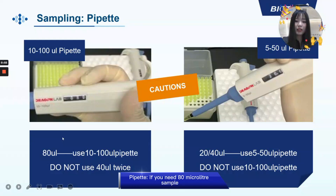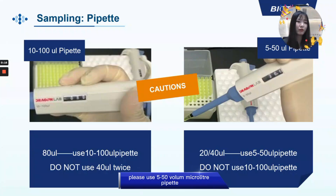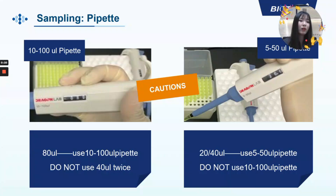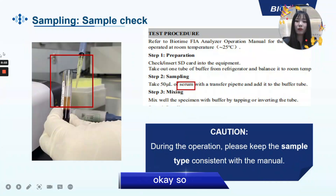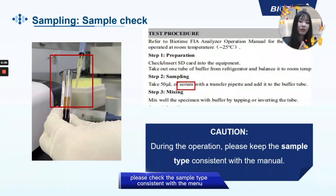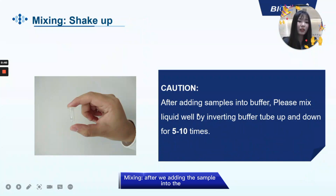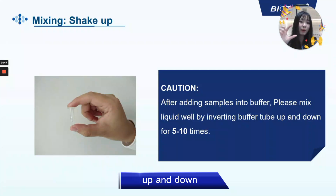Warm up: since we store the buffer at 2 to 8 degrees, please wait about 10 minutes for the buffer and sample to return to room temperature. If the sample is whole blood, please mix well before operation. Every time you bring out a new buffer, check that the liquid is clean, transparent, and has no impurities inside. If you find the liquid is contaminated, do not use it — take a new one. For pipetting: if you need 80 µL sample, use a 10 to 100 µL pipette. If you need 20 or 40 µL, please use a 5 to 15 µL pipette. Check that the sample type is consistent with the manual.